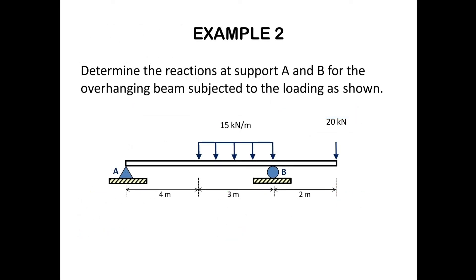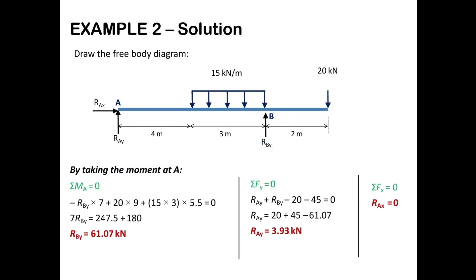In Example 2, determine the reactions at supports A and B for an overhanging beam subjected to the given loading. There is a uniformly distributed load of 15 kN/m distributed along a 3m length, giving a cumulative load of 15 × 3 = 45 kN, and a 20 kN load acting at the overhang end. One support is a pin — giving two reactions RAY and RAX — and the other is a roller, giving one reaction RBY.